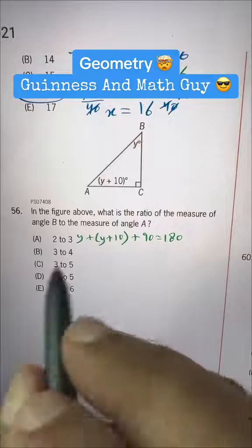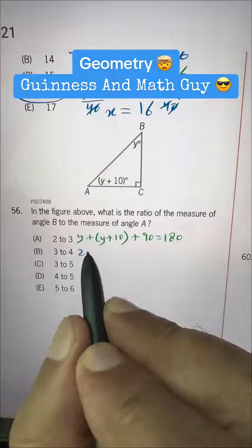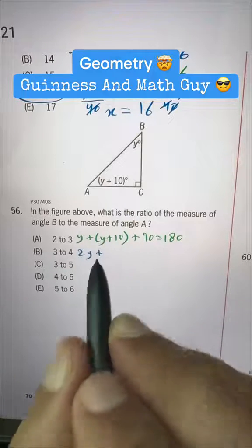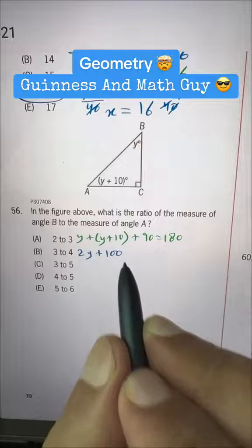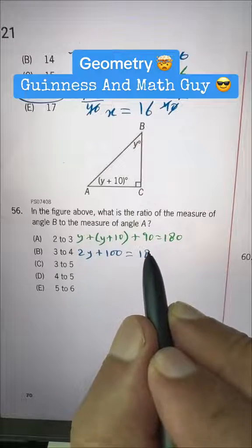Y plus Y is 2Y, plus 10 plus 90 is 100, is equal to 180.